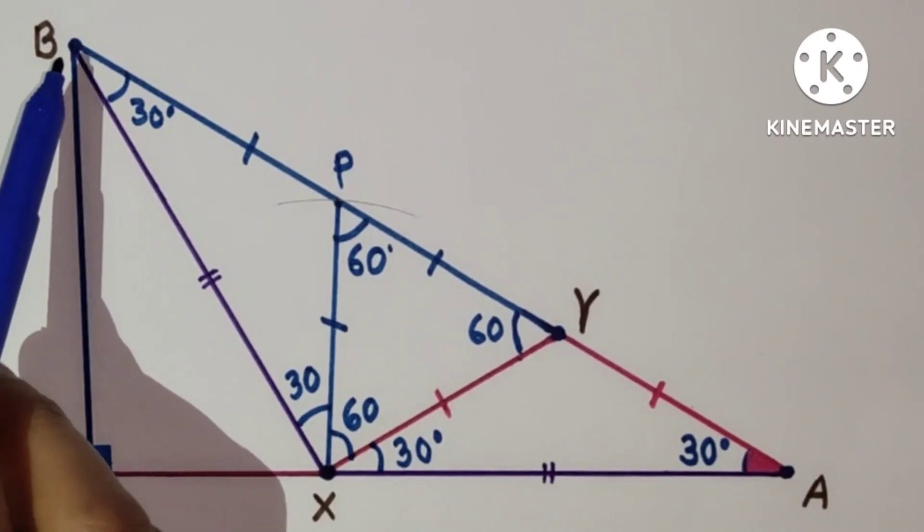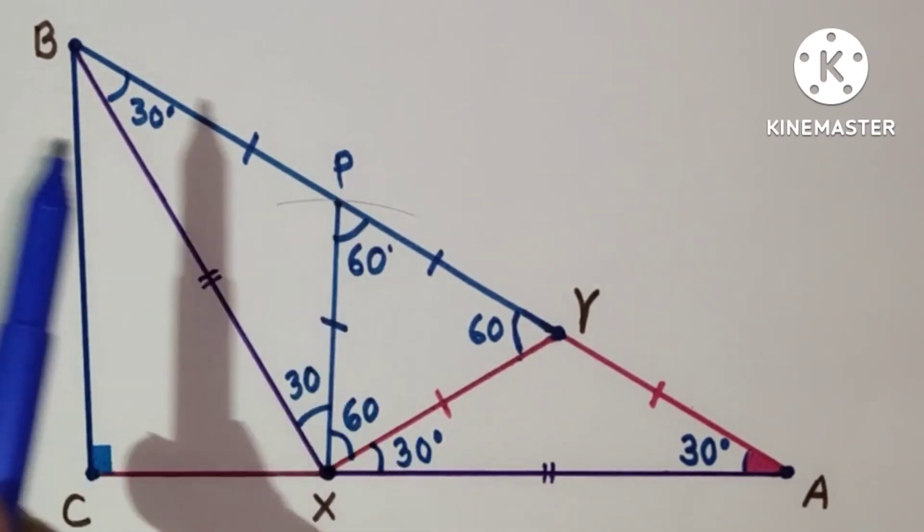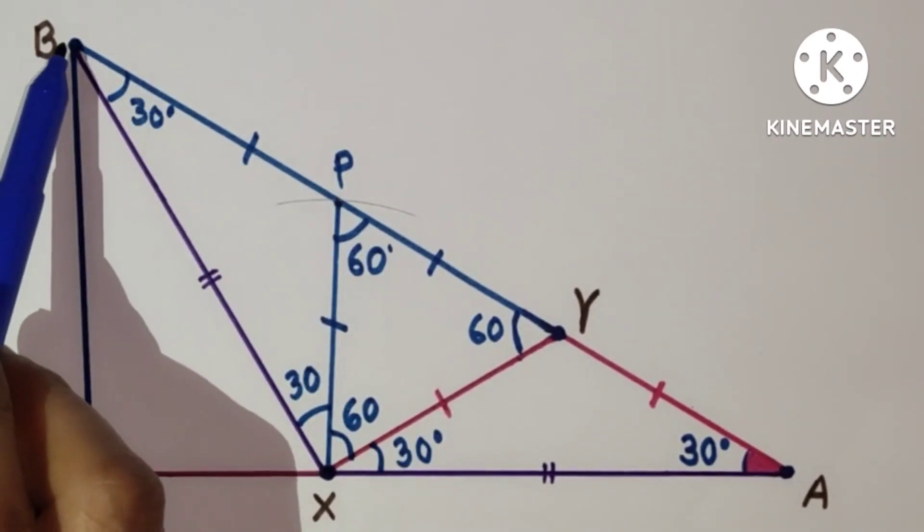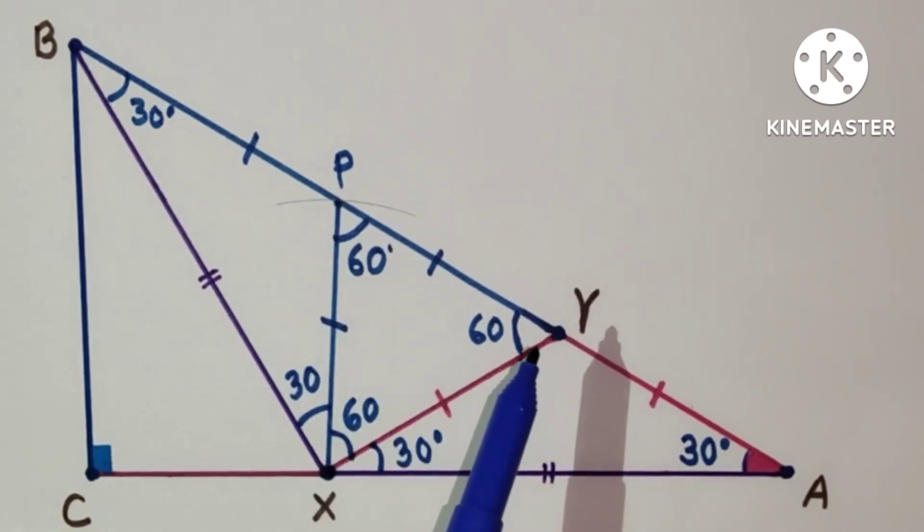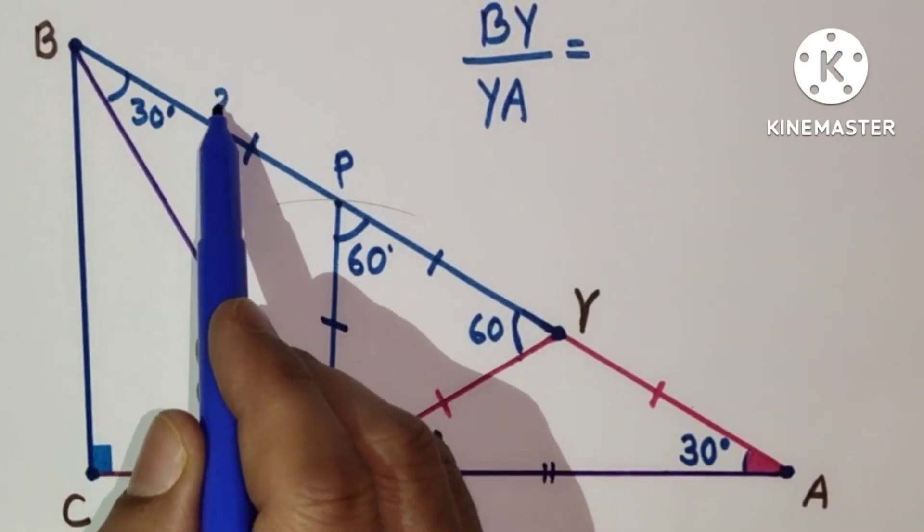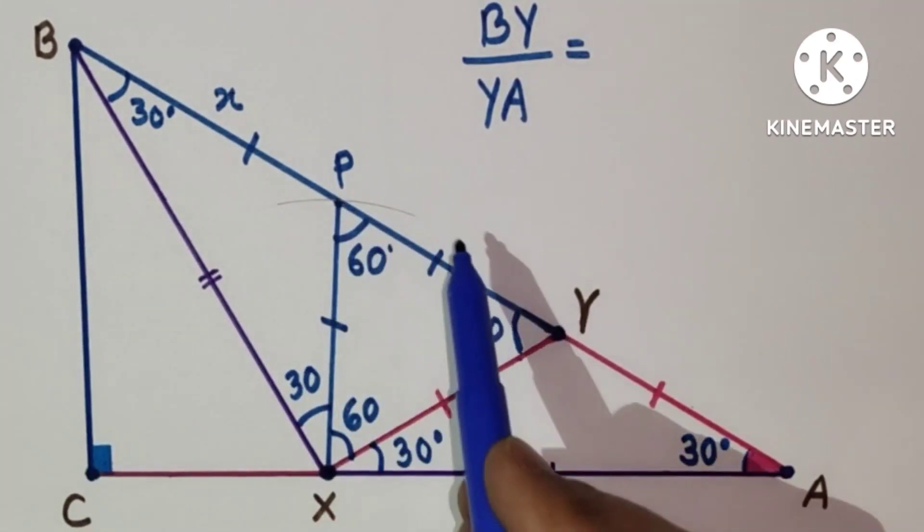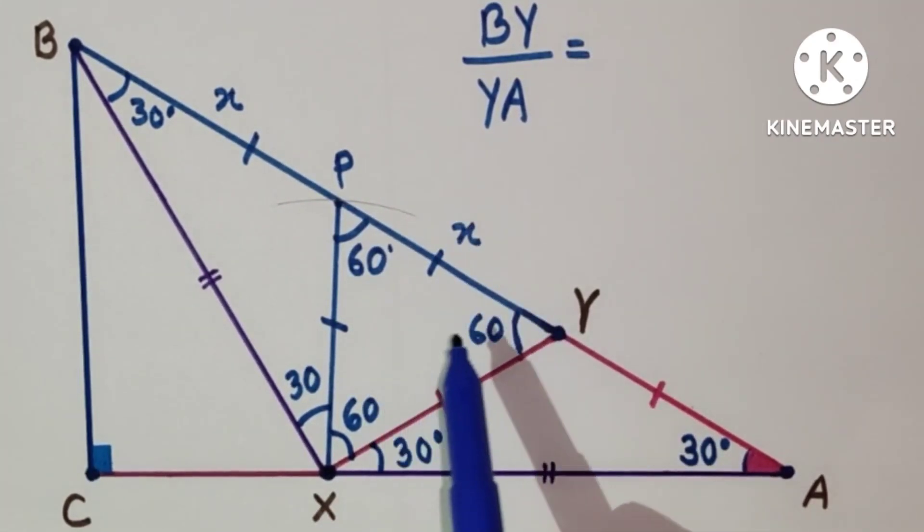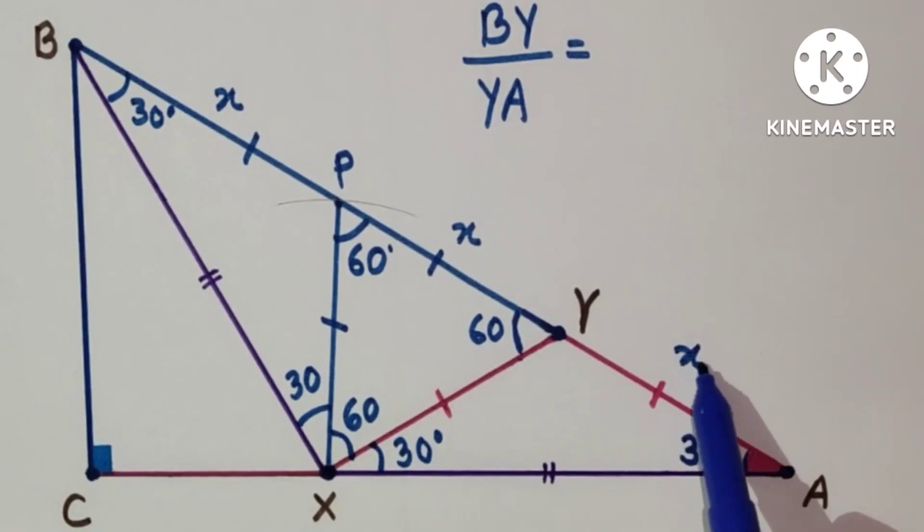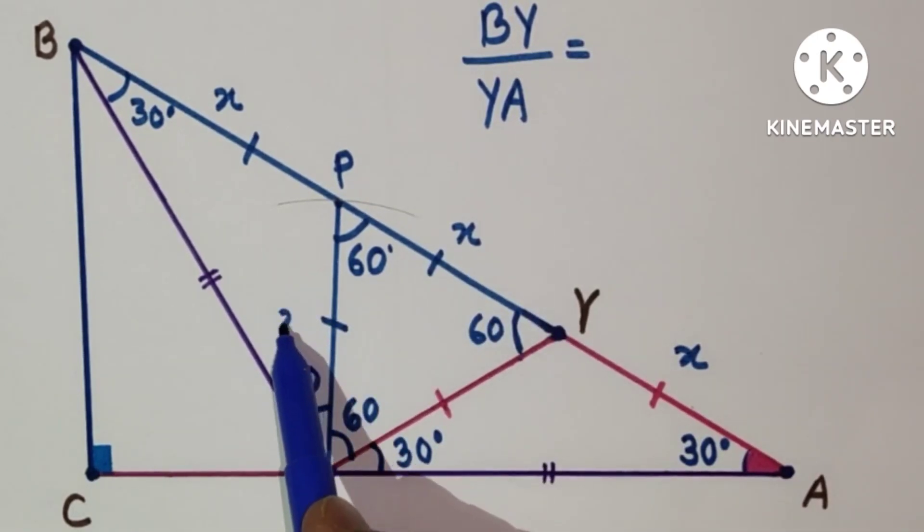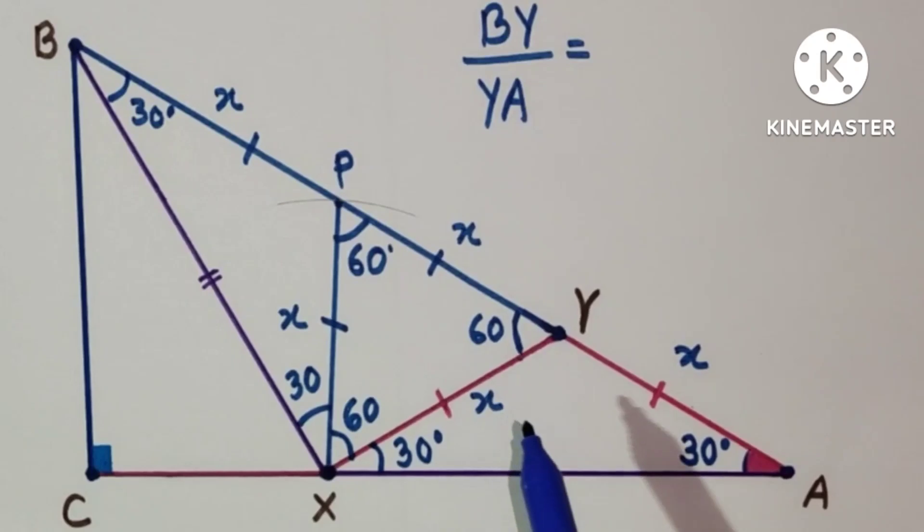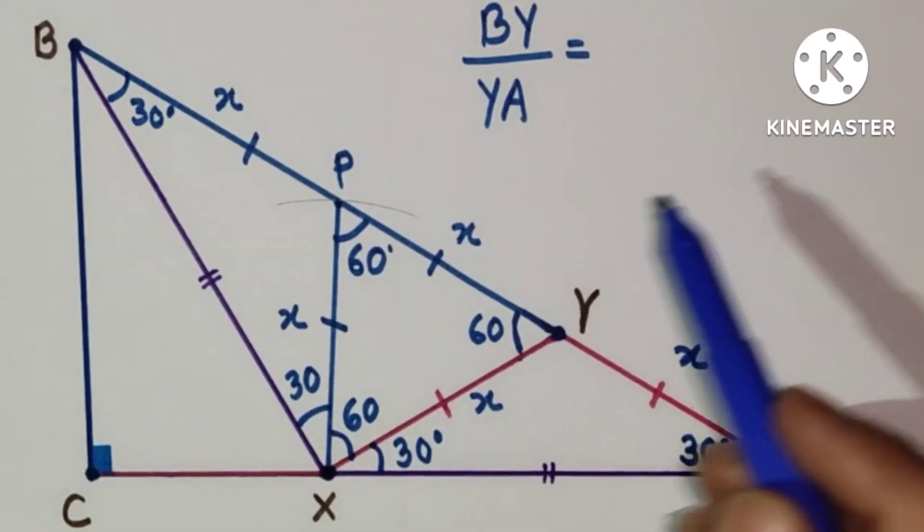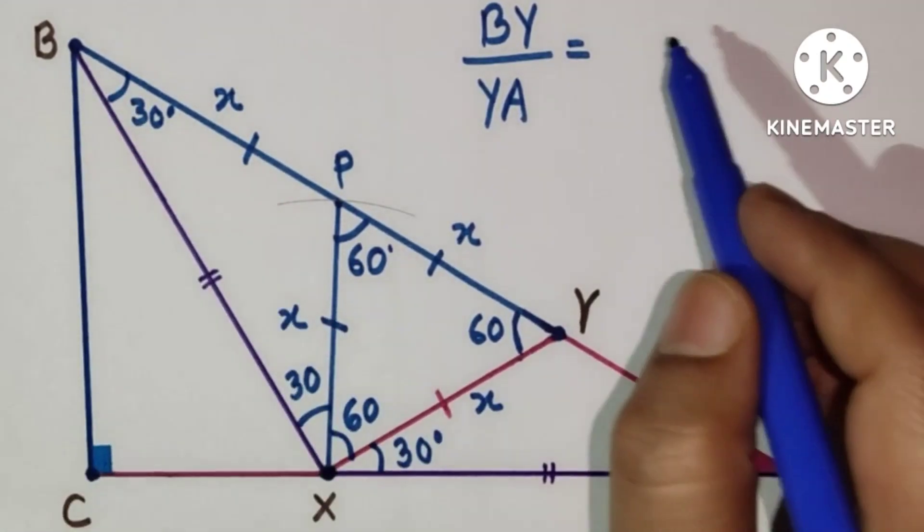So now BP is equal to PY is equal to YA. Let us suppose BP is X. Then PY will also be X, and YA will also be X, because all these three are equal. So BY is X plus X equals 2X.